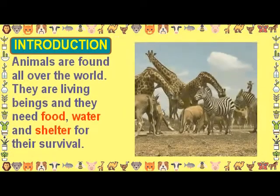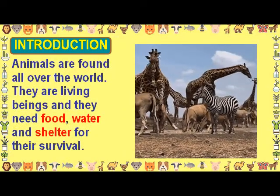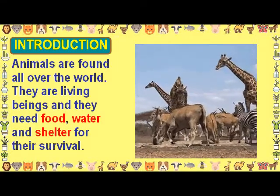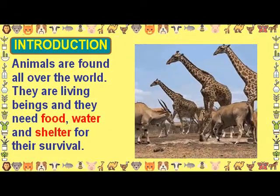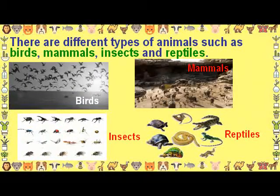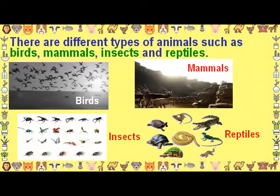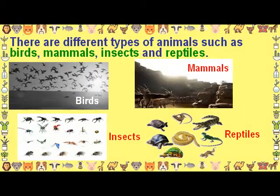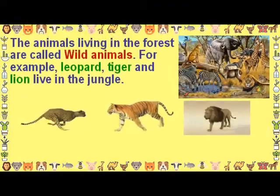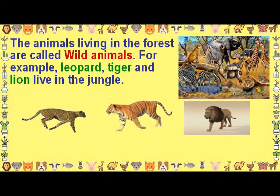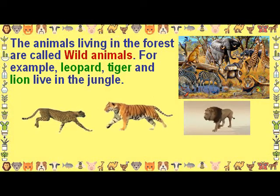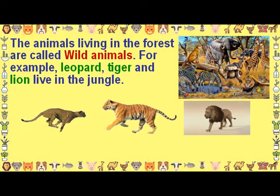Introduction: Animals are found all over the world. They are living beings and they need food, water, and shelter for their survival. There are different types of animals such as birds, mammals, insects, and reptiles. The animals living in the forest are called wild animals — for example, leopard, tiger, and lion live in the jungle.